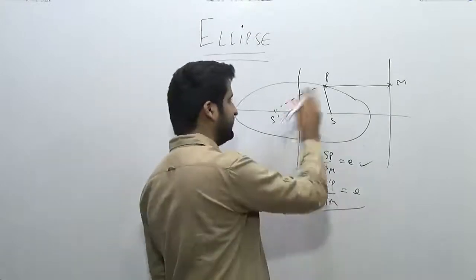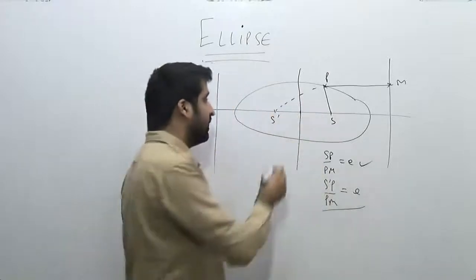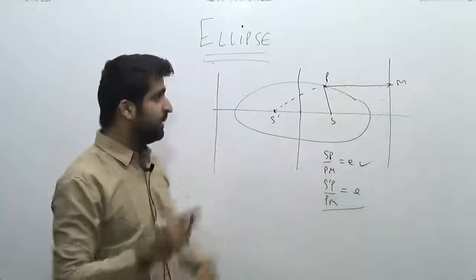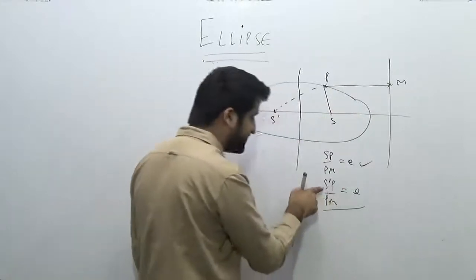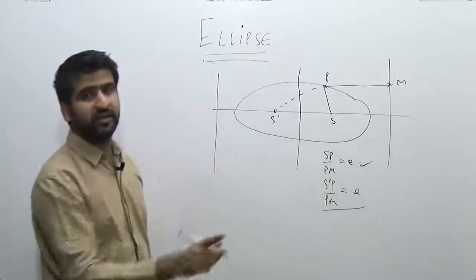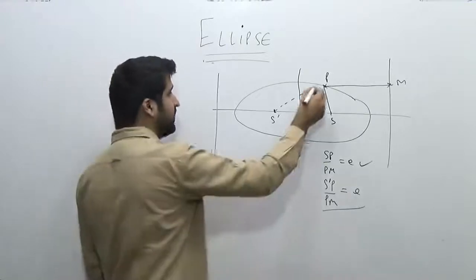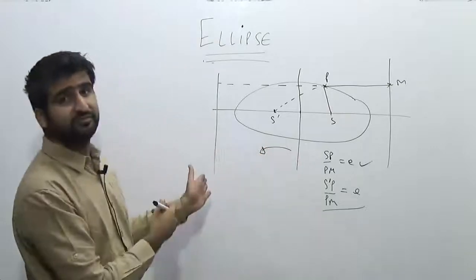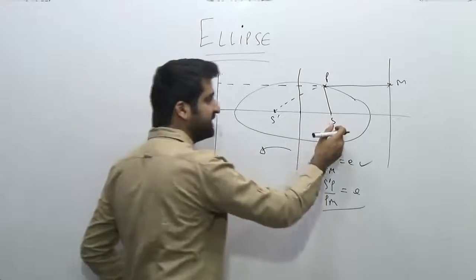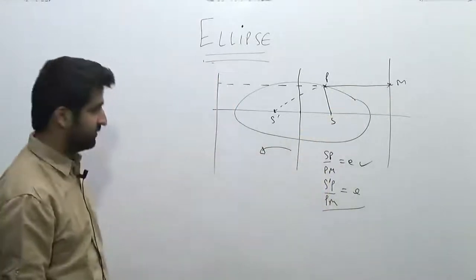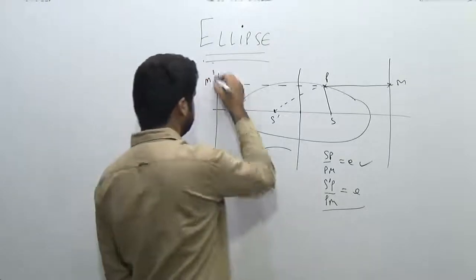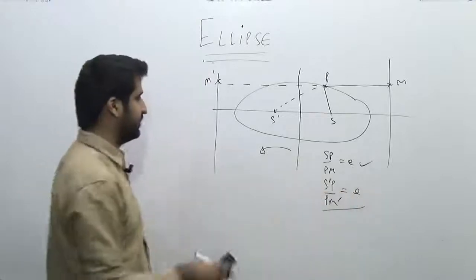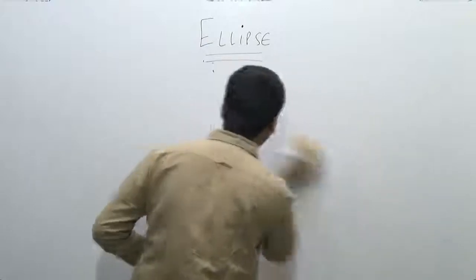This is a general doubt — if this ratio is coming out to be e, then the distance from the other focus, the ratio of the distance from the other focus and the directrix, should also be e. But in this case, pay attention: when I am seeing the distance from this focus, I have to see the corresponding directrix. What I mean by corresponding directrix is that I have to see the distance from the other directrix. So if I am seeing the focus on the left side of the ellipse, I have to see the left directrix. Similarly, if I am seeing the distance from the right focus, I have to see the right directrix. So this distance can be called PM'. I know that SP upon PM is equal to e, and S'P upon PM' is also equal to e.